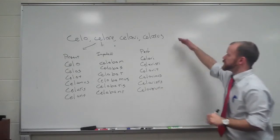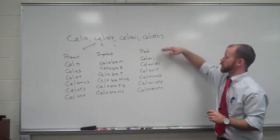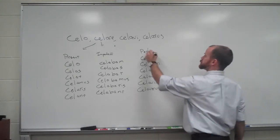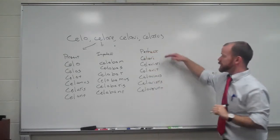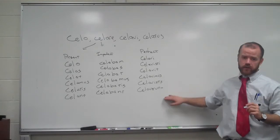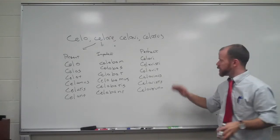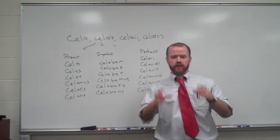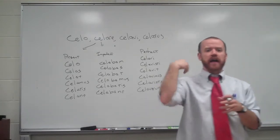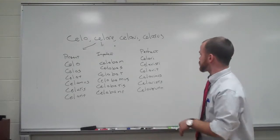So our endings are a little different here: I, isti, it, imus, istis, erunt. But it's the same idea — you're finding the stem and adding on endings.